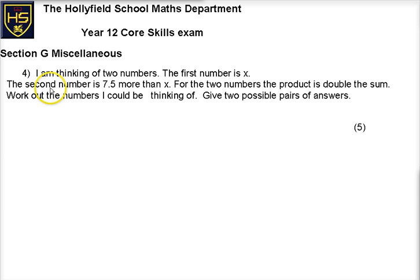A little bit distracted, let's get on with the question. I'm thinking of two numbers. The first number is x, the second number is 7.5 more than x, x plus 7.5. For the two numbers, the product is double the sum. Work out the numbers I could be thinking of. So the numbers are x and x plus 7.5.